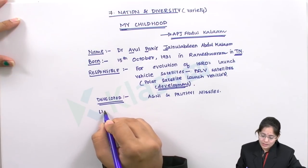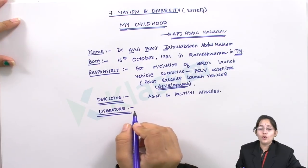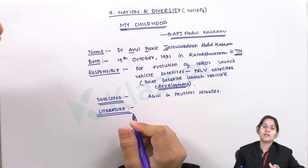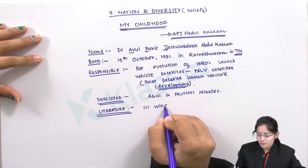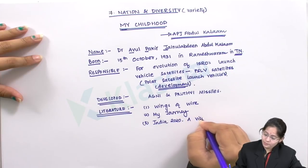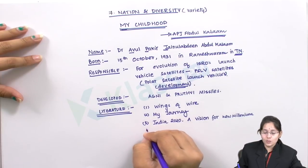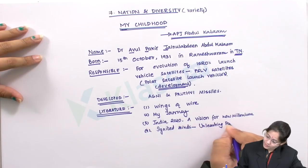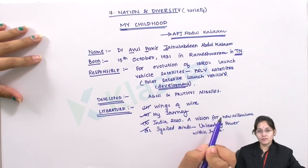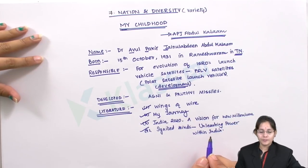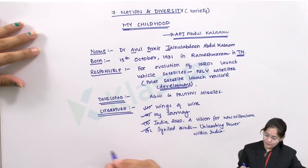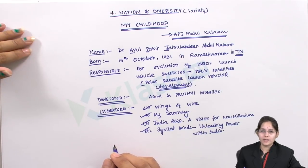Now let us see his contribution towards literature. His literary works included four books, which are famous across the entire nation. The first one is 'Wings of Fire,' the second is 'My Journey,' the third is 'India 2020: A Vision for New Millennium,' and the last one is 'Ignited Minds: Unleashing Power Within India.' Through these books he was able to convey all his ideas to every reader of the nation.